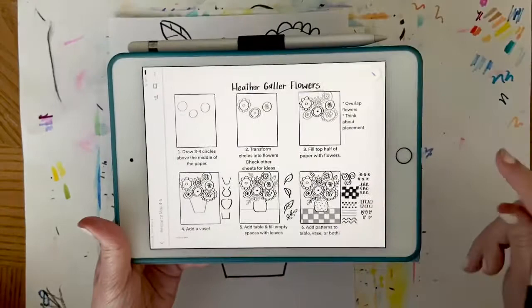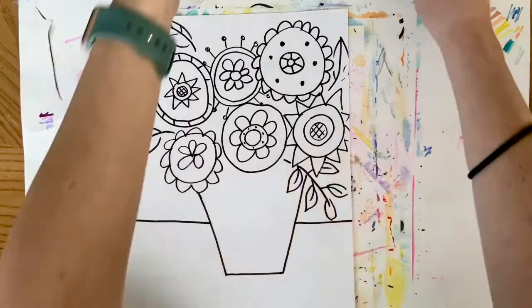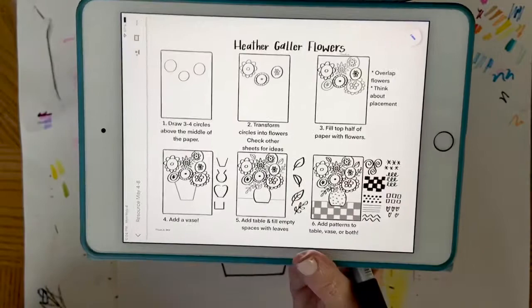The last step before we add color is you can add a pattern to your table and to your vase, or you can just do it to one of them. So any type of pattern you would like. Your handout sheet will show you a few different options, line and shape designs.